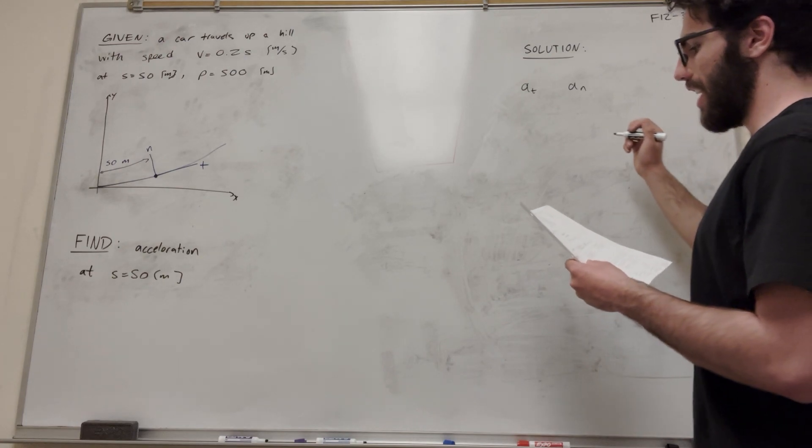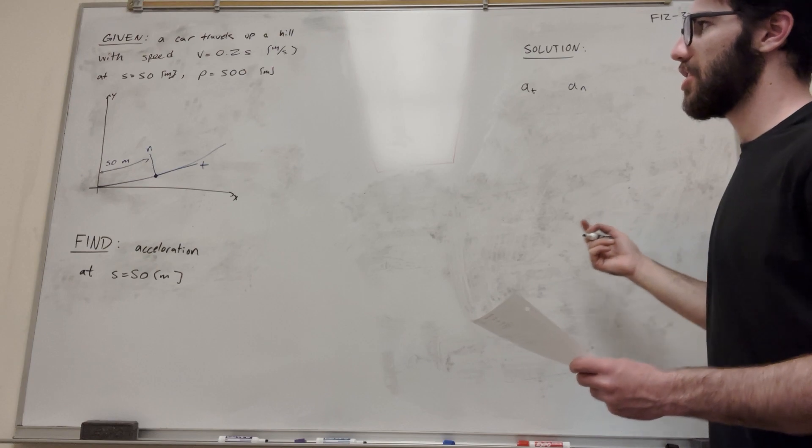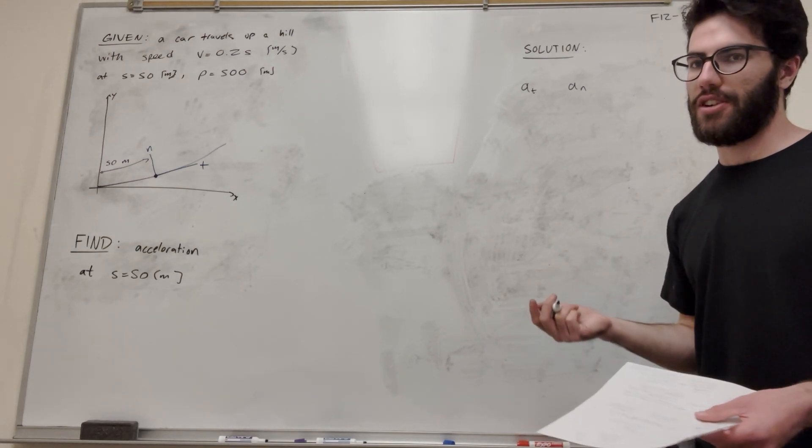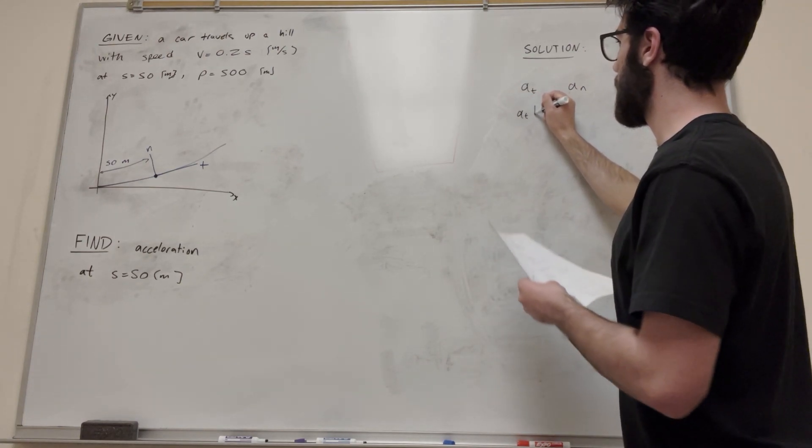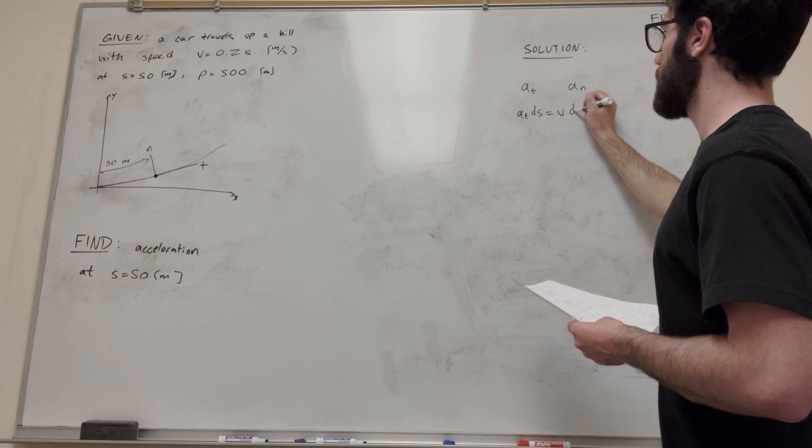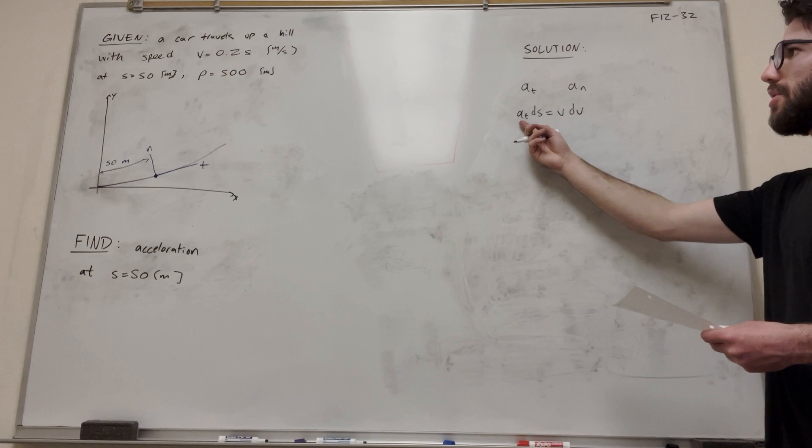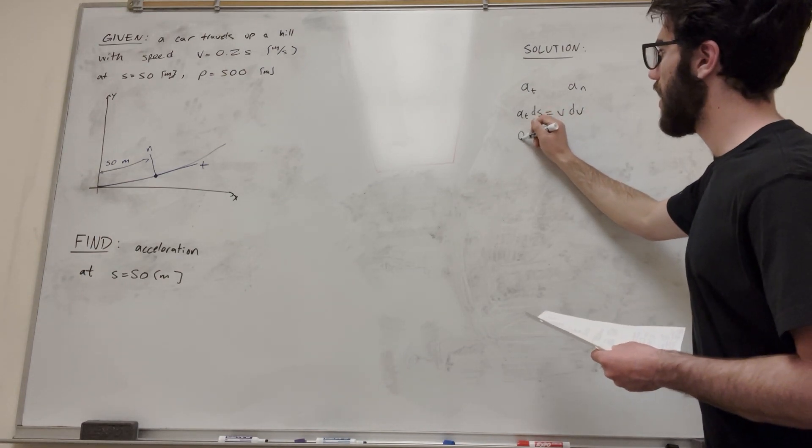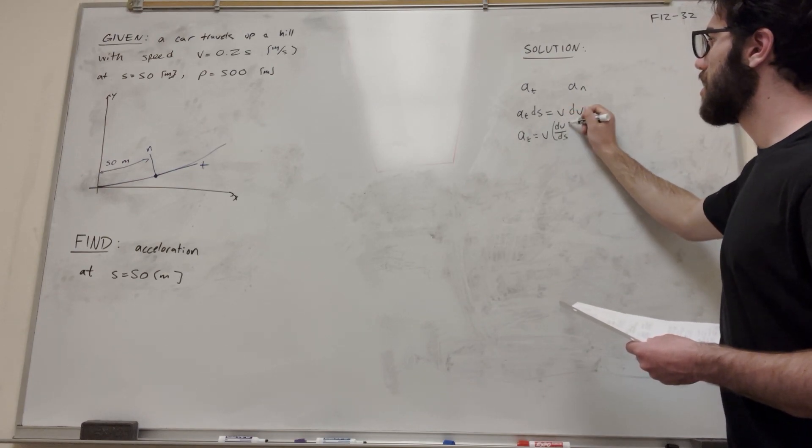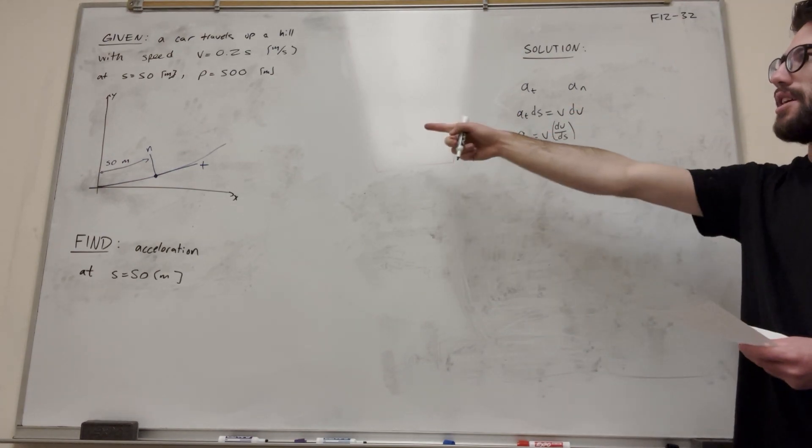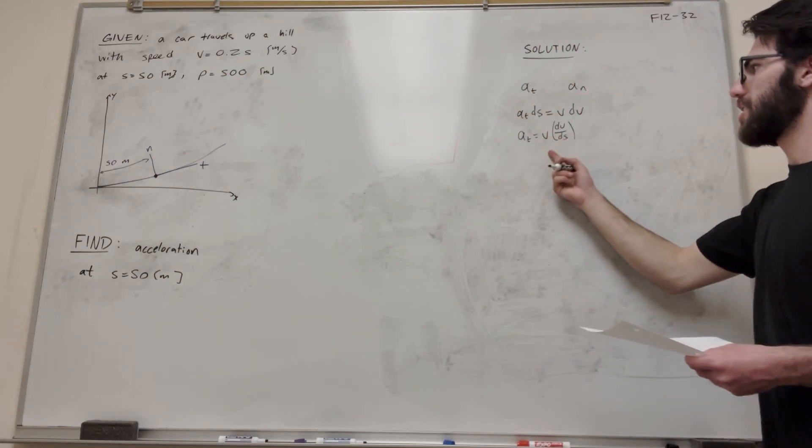So acceleration tangent, the equation we need to use for this, we're not given velocity in terms of time, so we can't use v-dot for acceleration tangent. What we need to use is this equation: acceleration tangent ds is equal to v dv. So this is the equation we need to use to find a_t. Derivative of velocity with respect to position, we can do that because we have this velocity in terms of position.